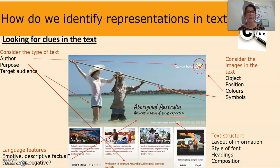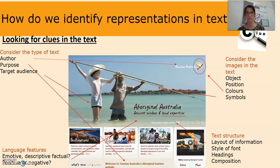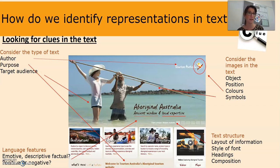We also need to think about language features — what kind of words are being used? Are they emotive, descriptive, factual, positive or negative, and how do those words position us to feel? I would say these words are quite positive and descriptive, maybe emotive. I've underlined 'ancient wisdom' and 'local expertise' — that is how they're selling Aboriginal tourism. They're positioning us to feel that this Aboriginal man, holding the spear, is the expert and that we'll be able to learn about an ancient culture through this website.